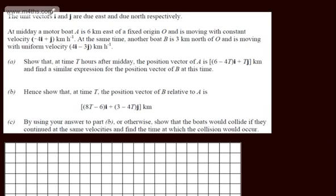In this question, we're told the unit vectors i and j are due east and due north respectively. At midday, a motorboat A is 6 km east of a fixed origin O and is moving with constant velocity minus 4i plus j km/h. At the same time, another boat B is 3 km north of O and is moving with uniform velocity 4i minus 3j km/h.